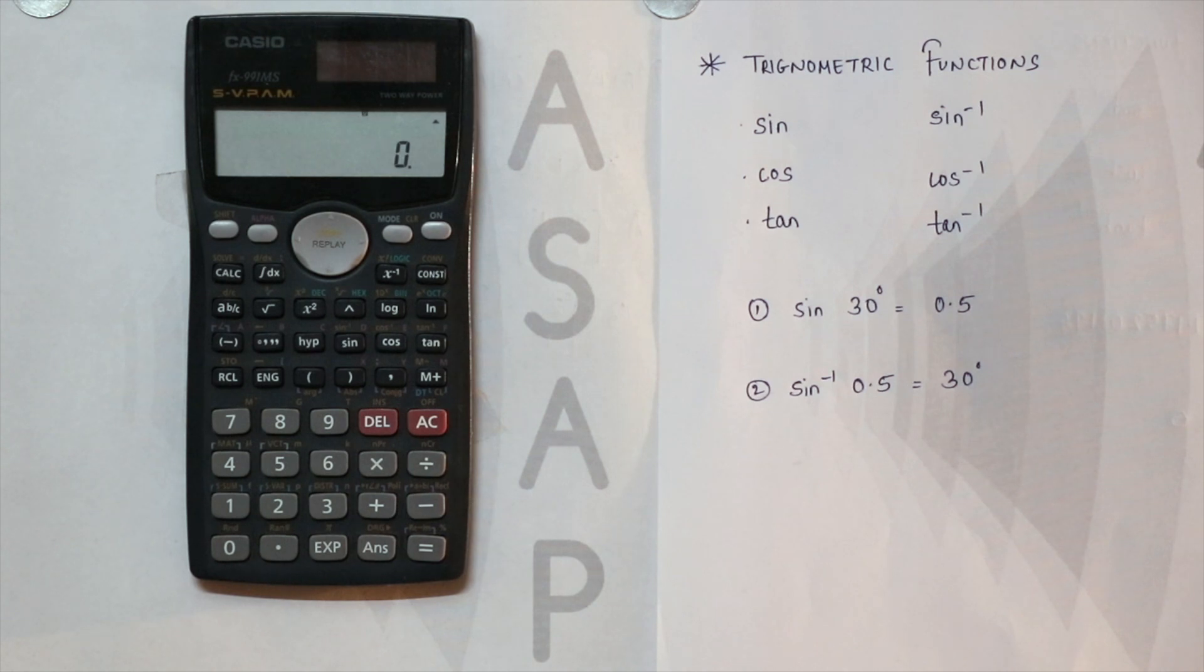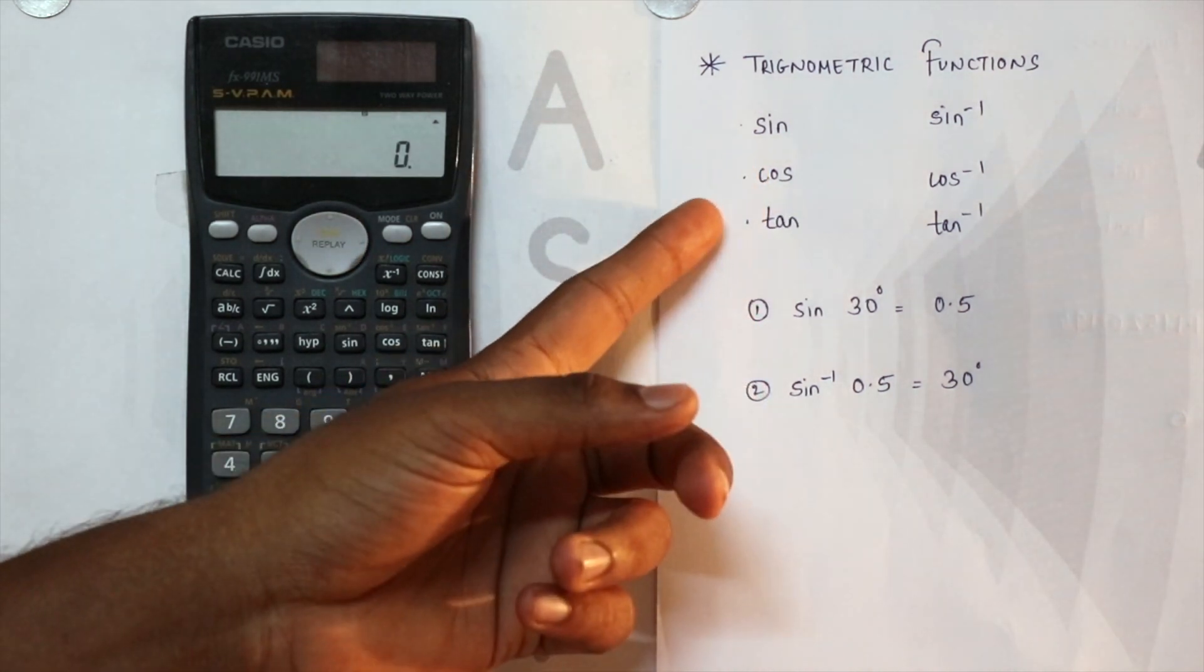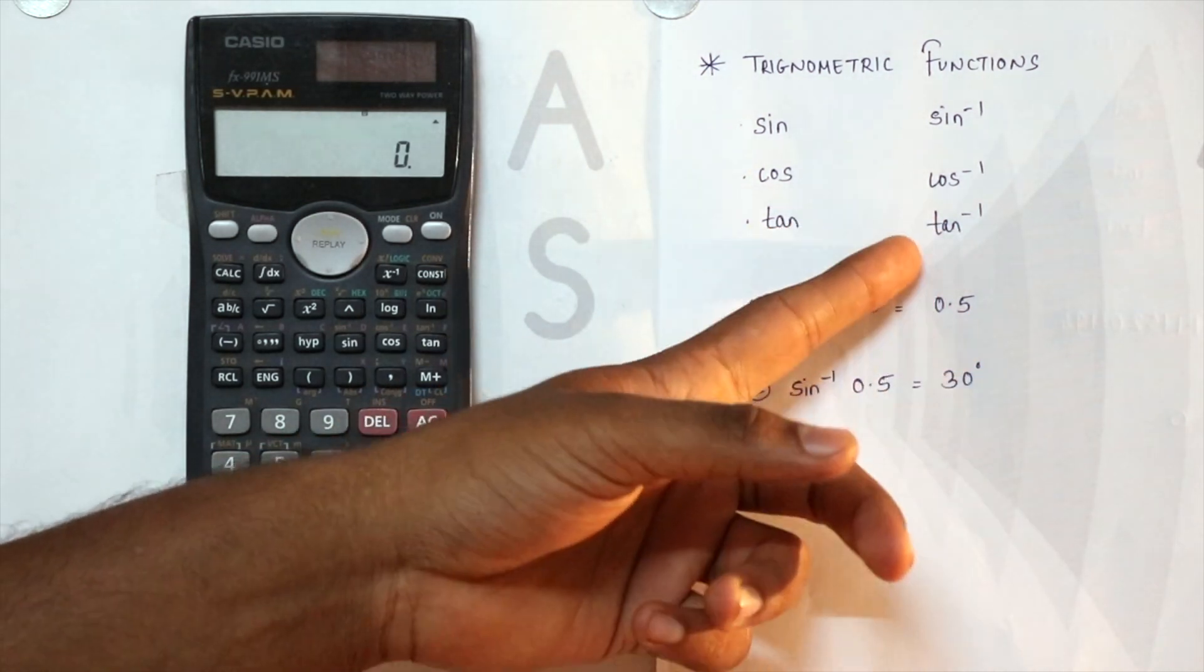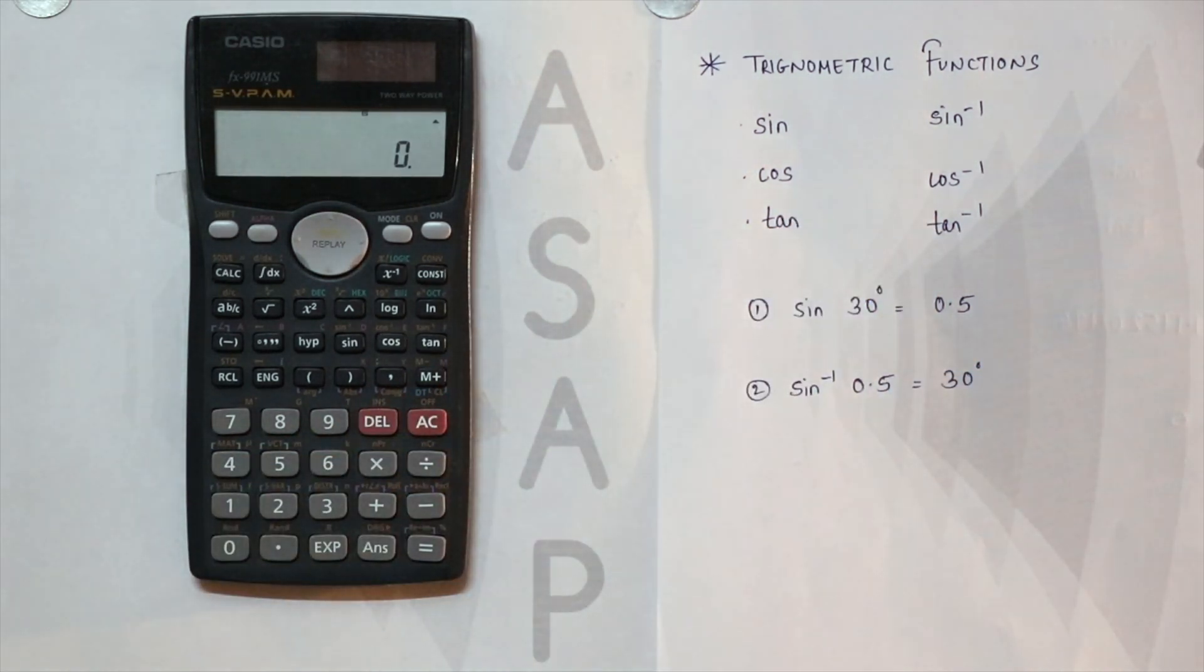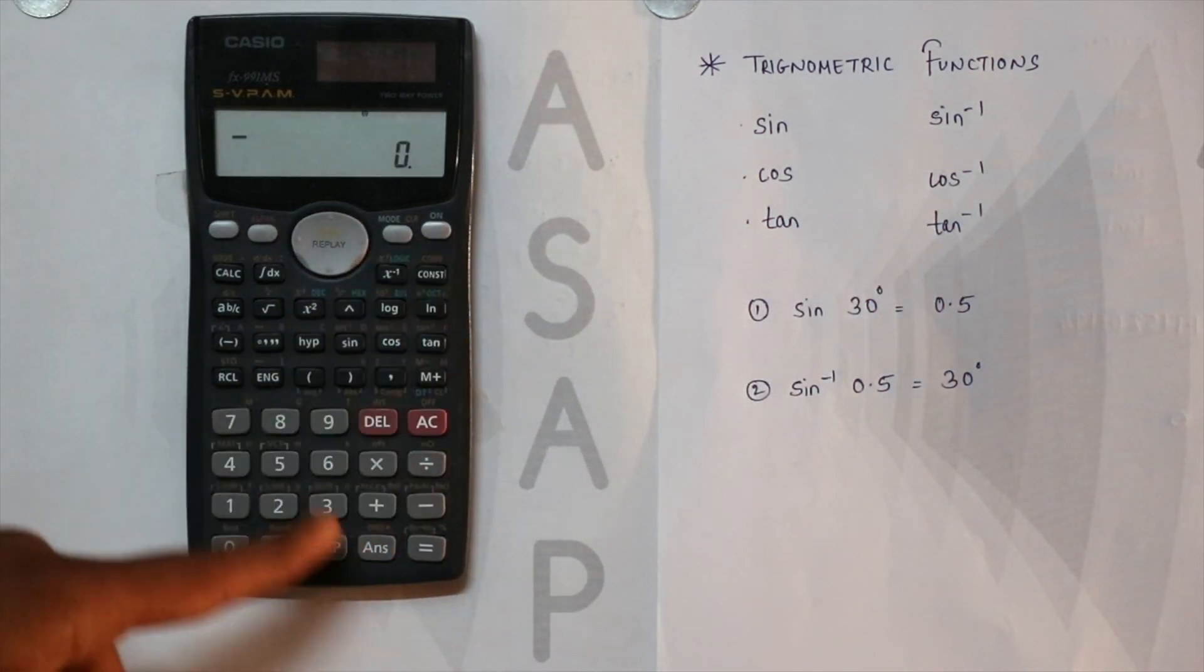Hello guys, today we are going to learn how to solve trigonometric functions on Casio 991ms. Trigonometric functions like you all know: sine, cos, tan, sine inverse, cos inverse, tan inverse. It's pretty simple.